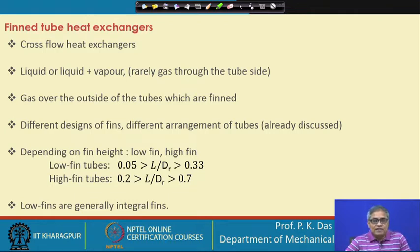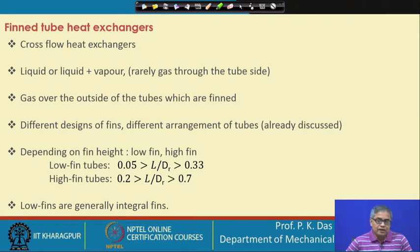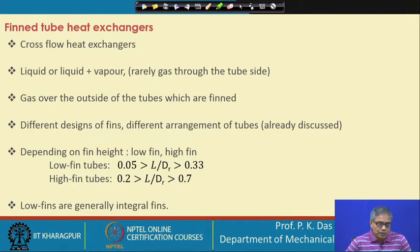Because we are considering tubes — whether circular or non-circular — the fins on these tubes will mostly be circumferential. For circumferential fins, we do not call it the length of the fin but rather the height of the fin. There are two classifications: low fin tubes, where fin heights are small. If the outer diameter of the tube is denoted by D_r and l is the height of the fin, then ranges are given for low fin tubes and high fin tubes.